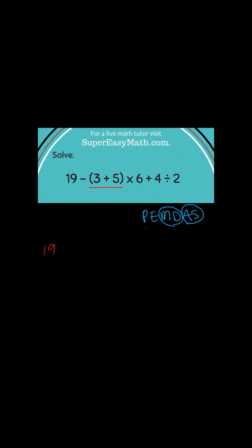So I'm going to rewrite the whole thing except instead of writing parentheses 3 plus 5, I'm going to write what that equals, which is 8, and then times 6 plus 4 divided by 2.